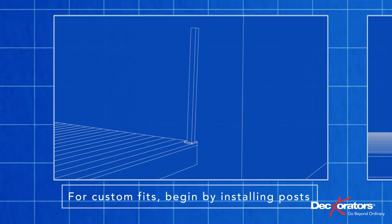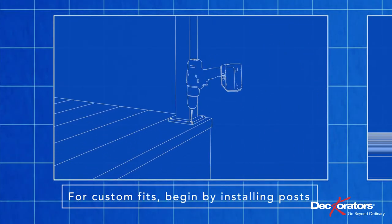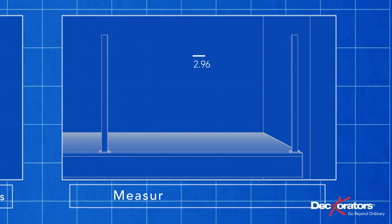If you need to cut a railing section to fit, begin by setting the post where you need it. Fasten it to the deck the same way. Measure the distance between the posts. In this case, it's 45 ¾ inches.